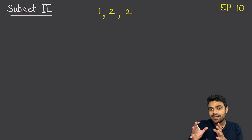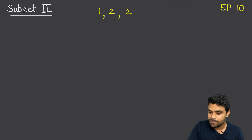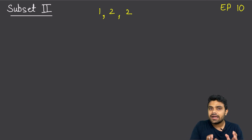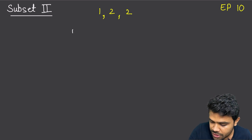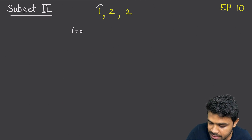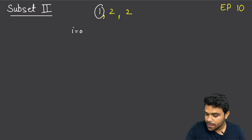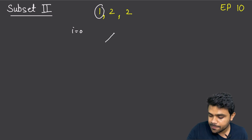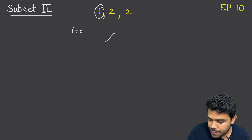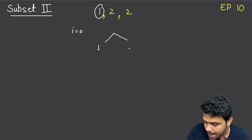I am using the same recursion tree strategy from episode number 7. We have a pointer i, initially equal to 0, talking about the element 1. For this element, we have two options: one option is to take it, one option is to ignore it. On the left-hand side, 1 will be in the subset; on the right-hand side, the subset will be empty.